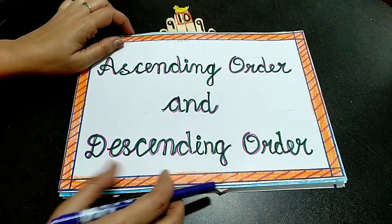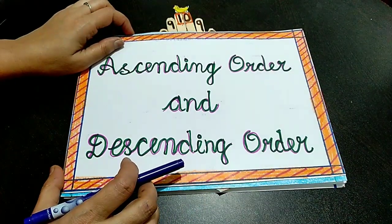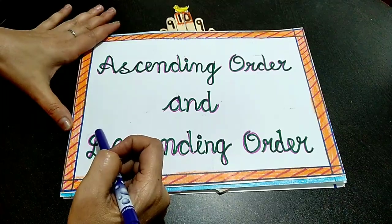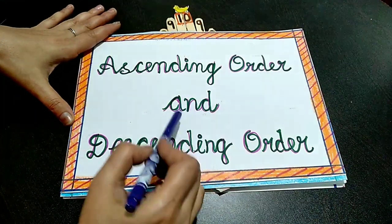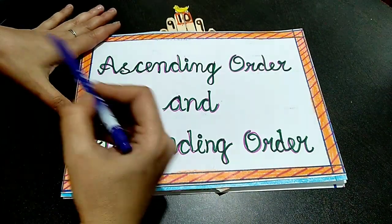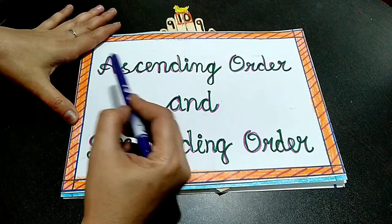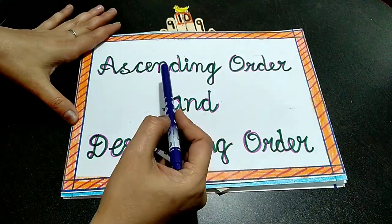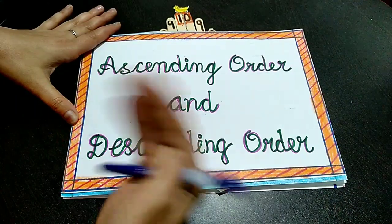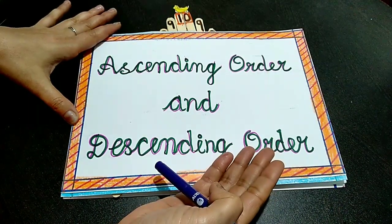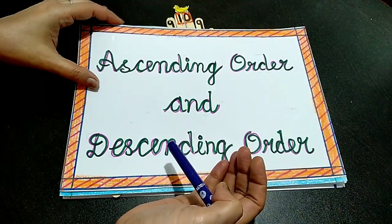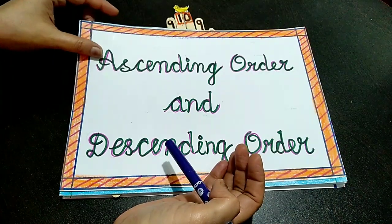Good morning kids. Are you all fit and fine and staying indoors? Today I have come up with a new video on the topic Ascending Order and Descending Order of Numbers. When the numbers are arranged from the smallest to the greatest, it is called Ascending Order. When the numbers are arranged from the greatest to the smallest, it is known as Descending Order. Ascending Order is also known as Increasing Order and Descending Order is also called Decreasing Order.